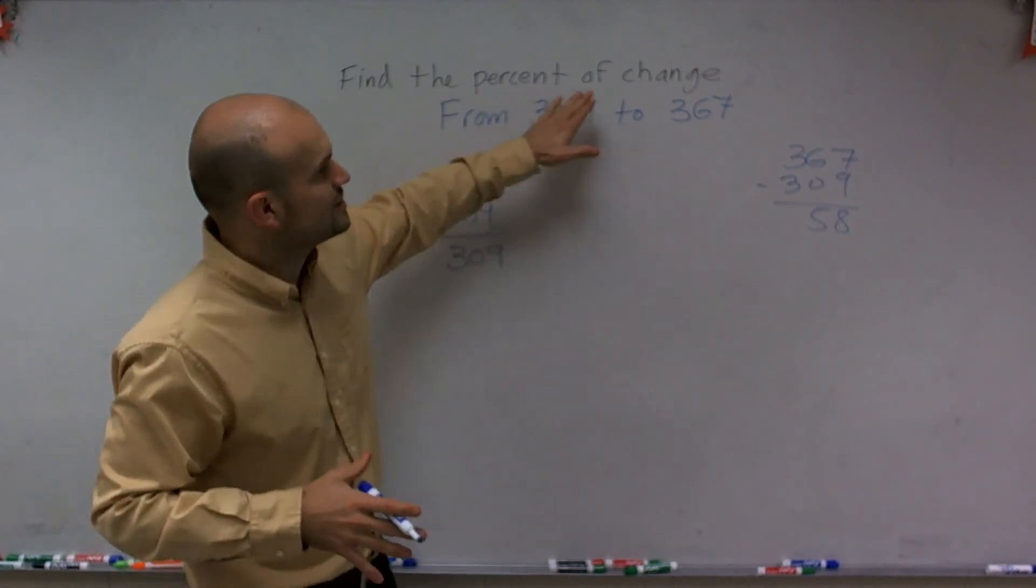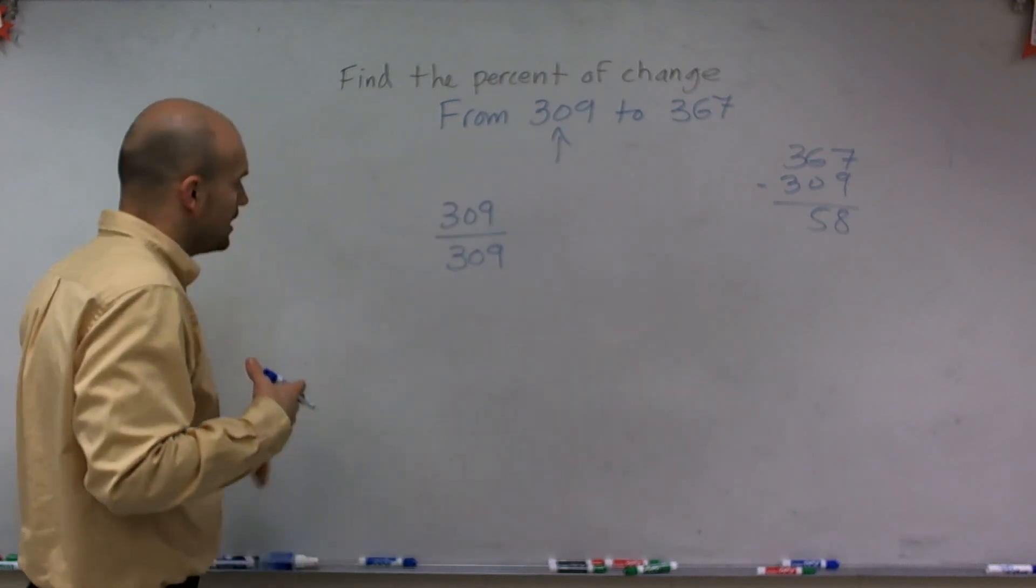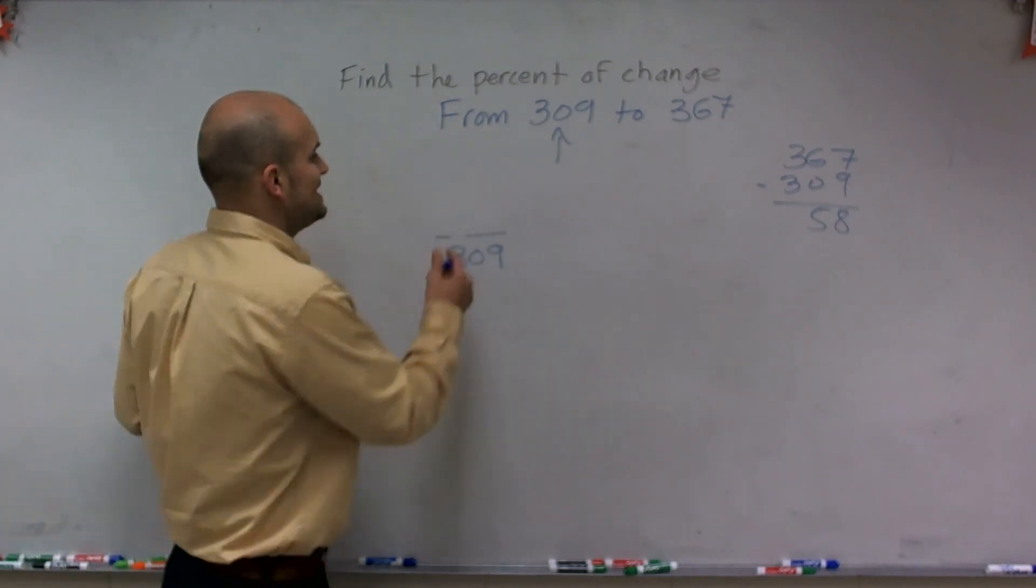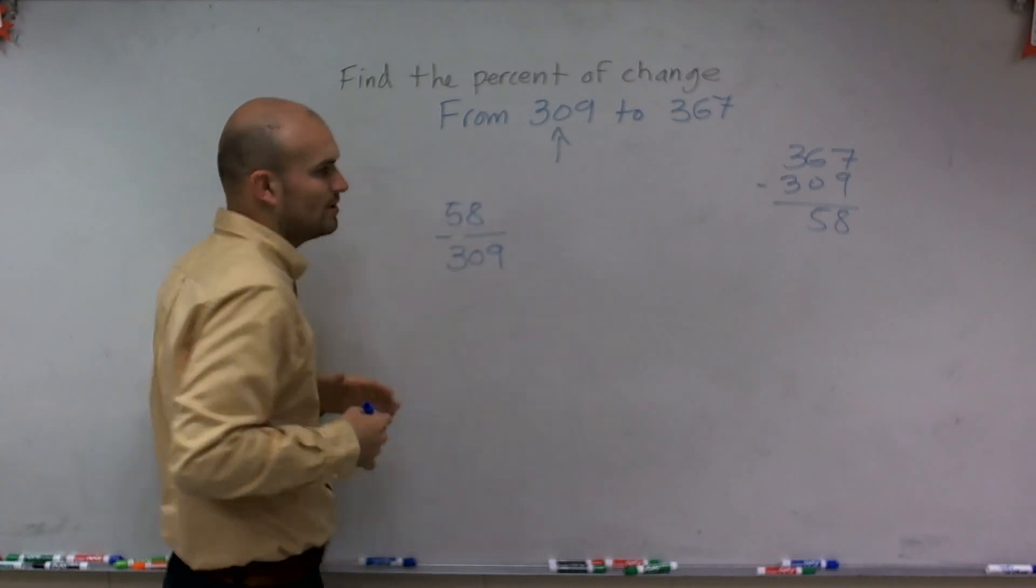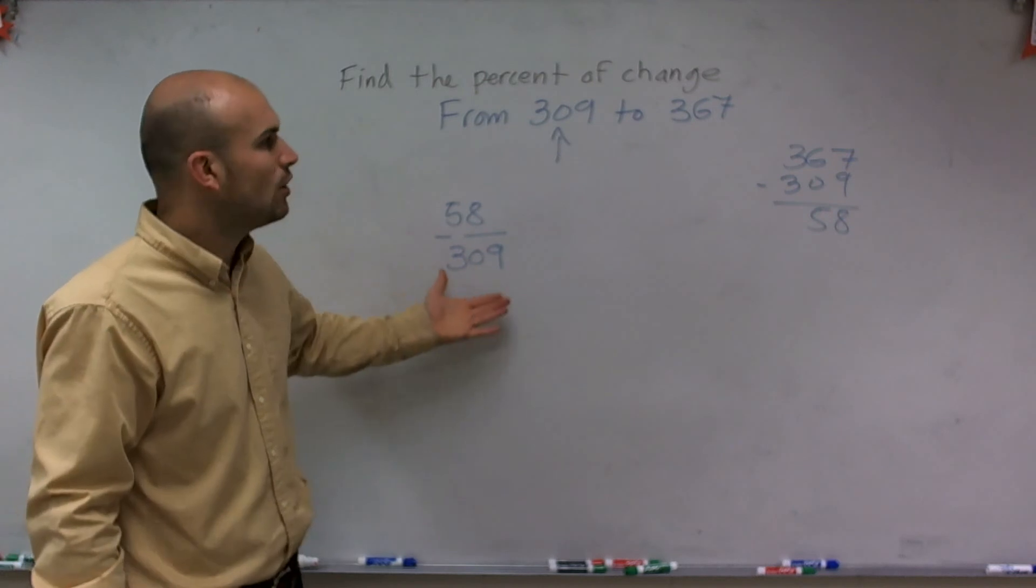But what they're saying is there was a change of units. So out of 309 units, I only had 58 of them changed. So what you can see is the change is going to be a part as 309 is going to be my whole.